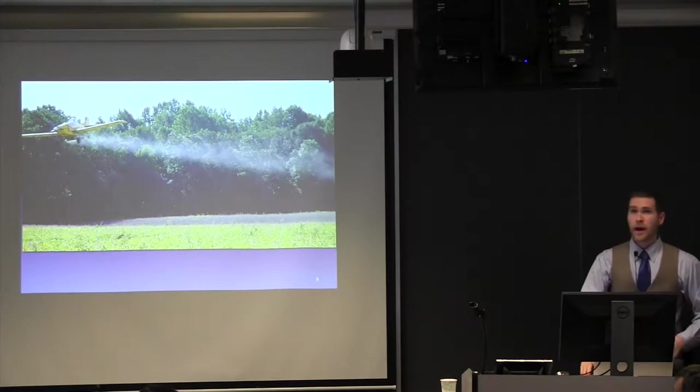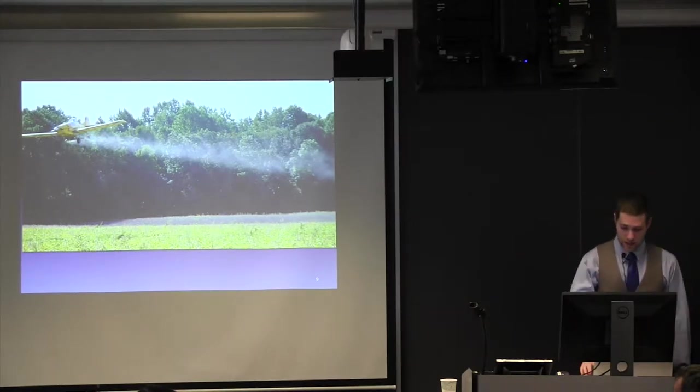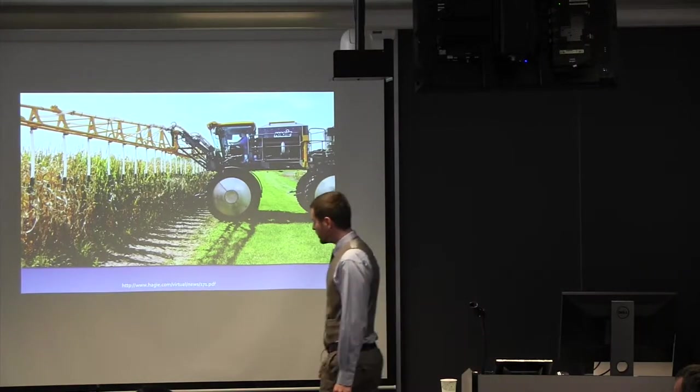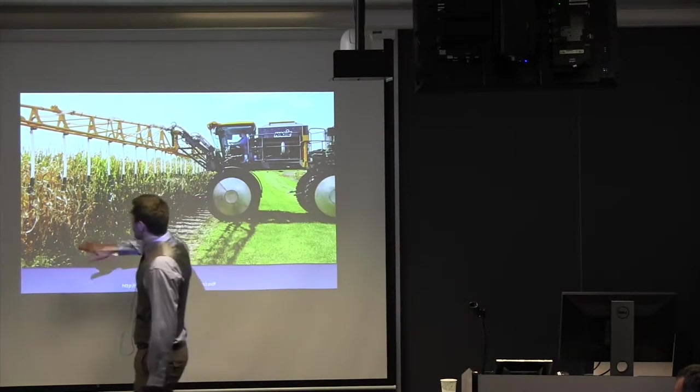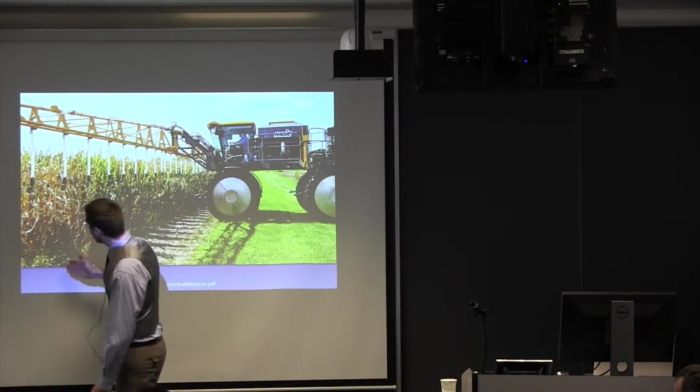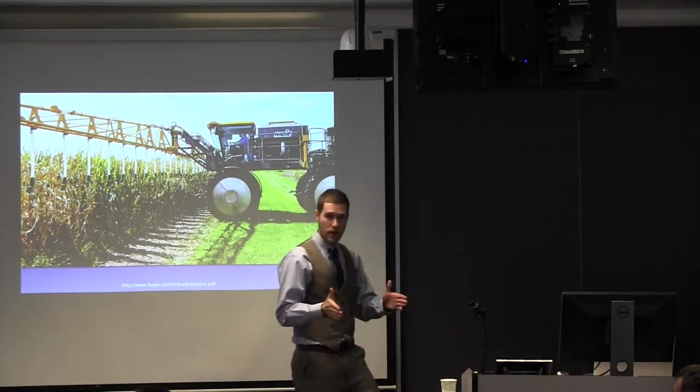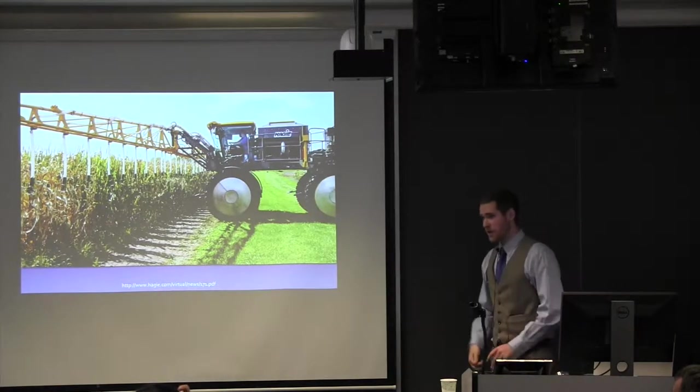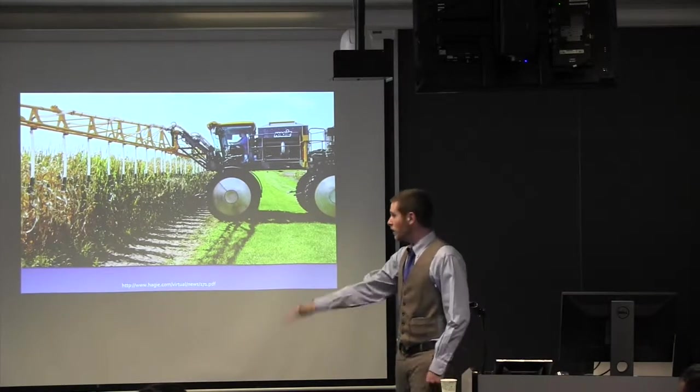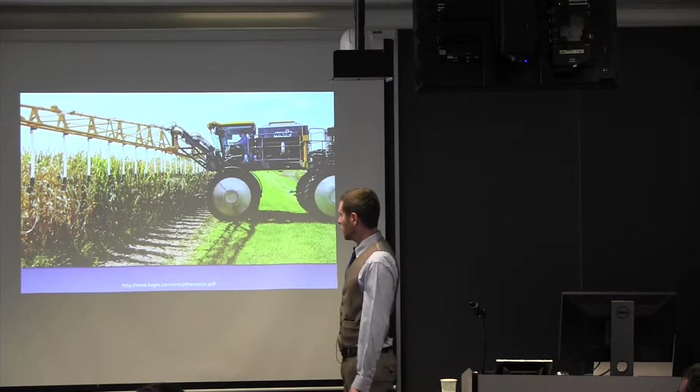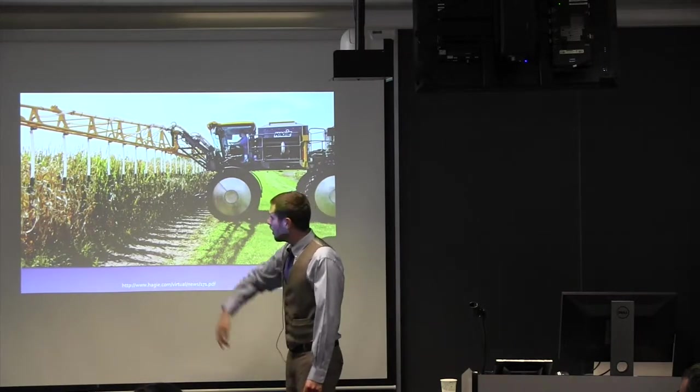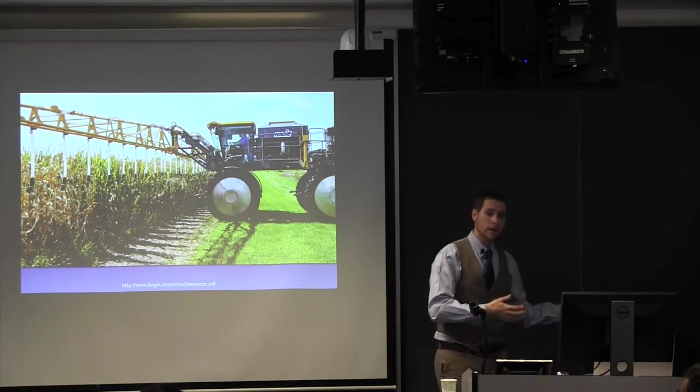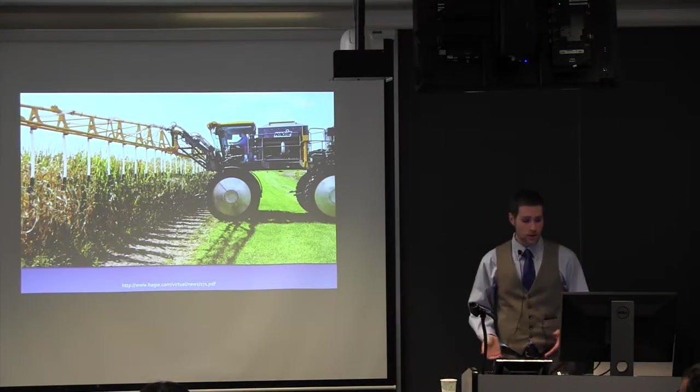So a potential better way to do this might be with something like this. So we're still interseeding here. And these hoses are just dropping cover crops into those interrows of the corn. So this is a little better. You can ensure that the cover crops are actually getting to the ground, not getting muddled in the canopy. However, you still have this problem that if there's a big, strong wind, you're not going to have cover crops in nice, straight rows.